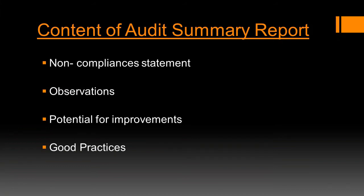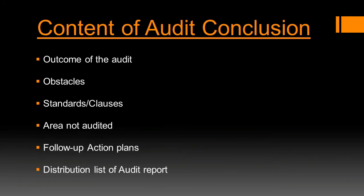The content of the audit report should include non-compliance statements, observations, potential for improvements, and good practices. Note that observations are not NCs, but today's observation is tomorrow's potential NC, so the auditor should take observations very seriously.